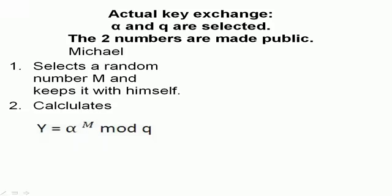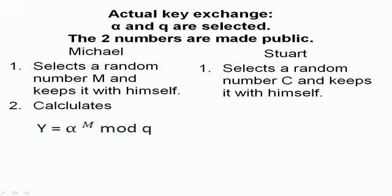Stuart selects his private key, that is a random number C, and keeps it with himself. Then he calculates Z by using this formula, using alpha, Q, and his private key C.